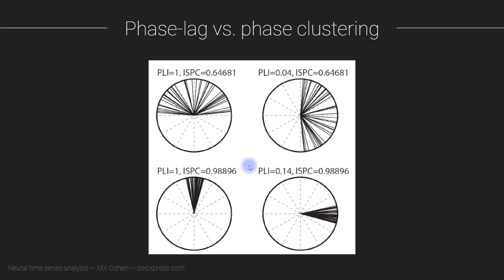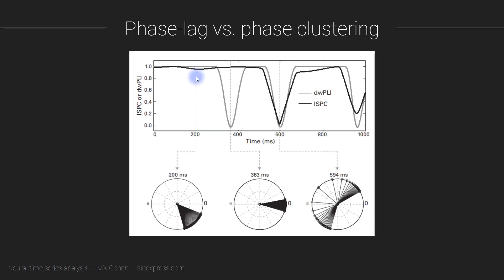This is a fairly simple demonstration showing the dissociation between PLI and phase clustering. In this next simulation, I've taken a distribution of phase angles and rotated them slowly over time. The strength of the clustering is basically the same, but the distribution is moving around the circle slowly over time, so the clustering here is the same.